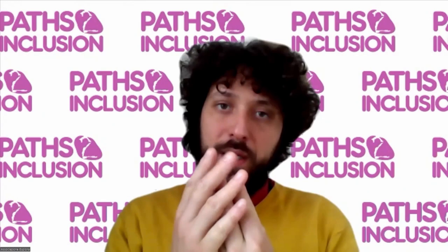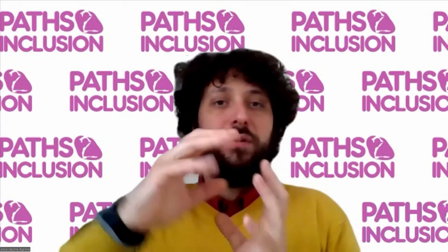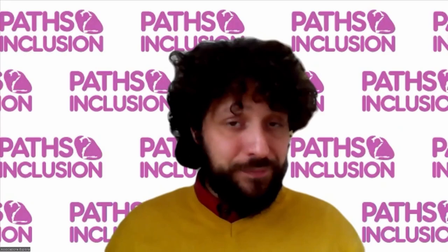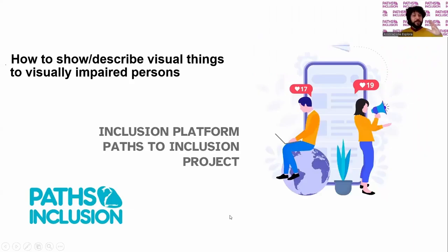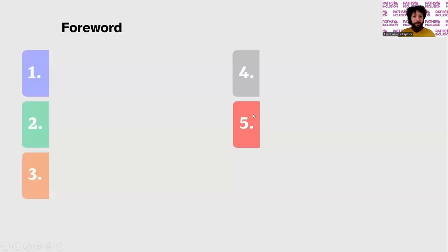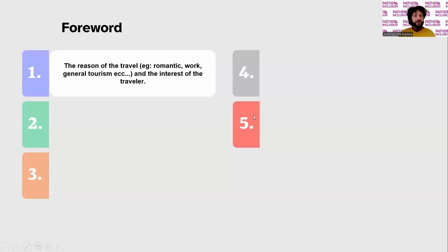You have to know what is around what you are touching. So, let's share the screen and start our webinar: how to describe visual things to visually impaired people. Some forewords first.